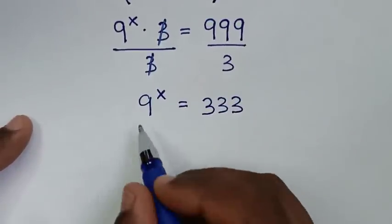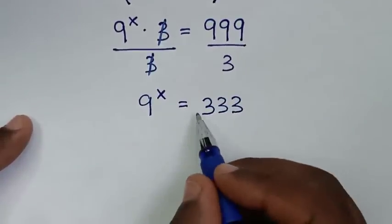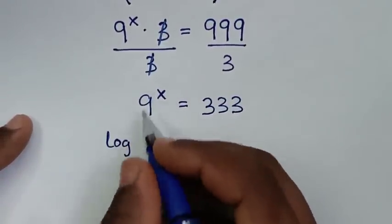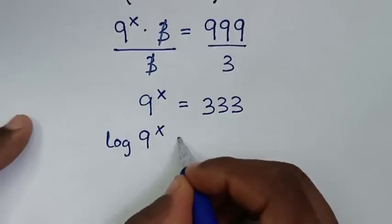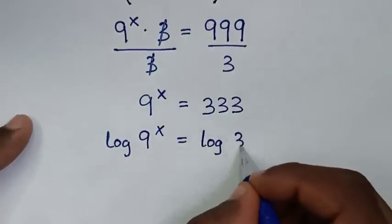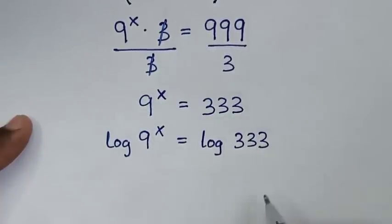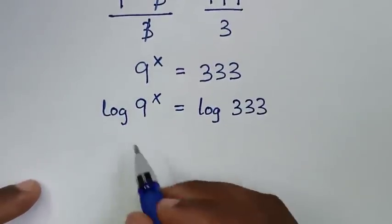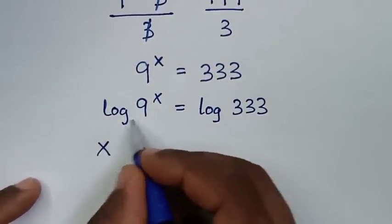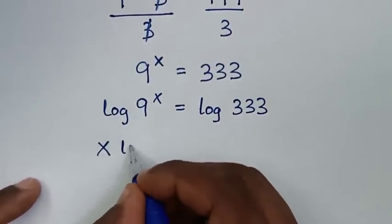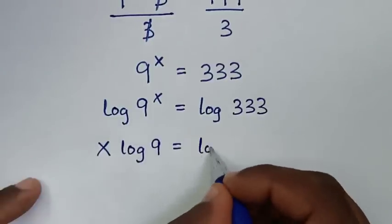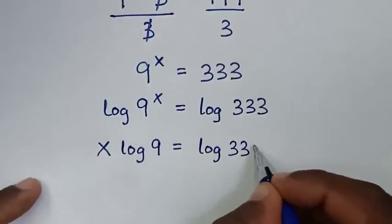Then in the next step, we'll apply log on both sides. So it will be log of 9 power x is equal to log of 333. Then the power x will move to the front, so it will be x times log of 9 is equal to log of 333.